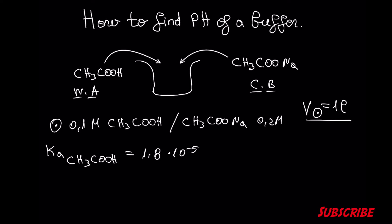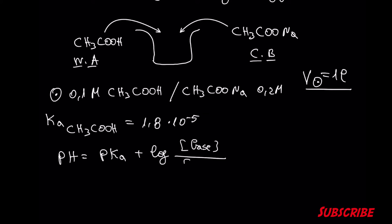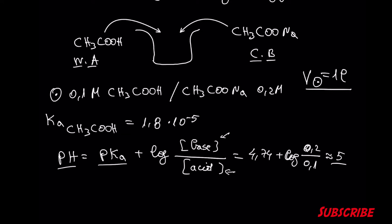In order to find the pH, we are going to use the Henderson-Hasselbalch equation, which is a simplification of the equilibrium problem. Let's run the calculations. The pH is 5, which is less than 7 — it means it's acidic.